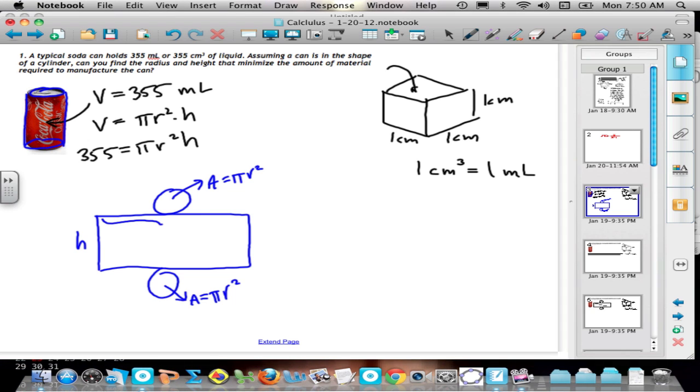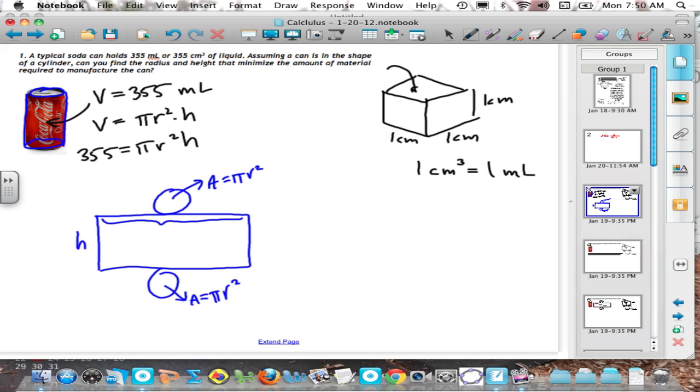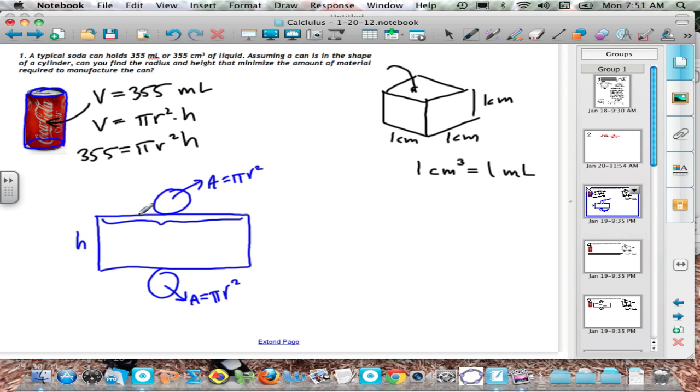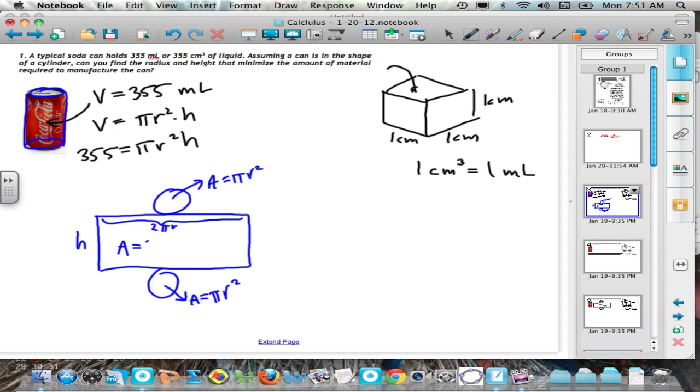And then this distance right here is basically going to be how we wrap the can around, how the rectangle is going to wrap around the can. So you can see that as I go around the circle, this edge here would wrap right around there. Well, that's one circumference of that circle. So that circumference is going to be measured by 2 pi r, which makes the area of this rectangle 2 pi r h.